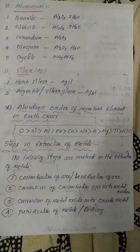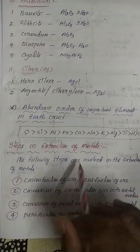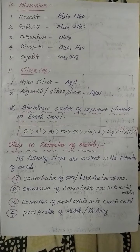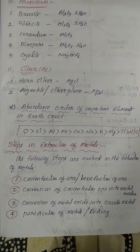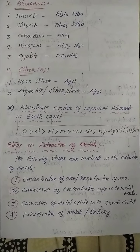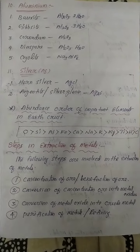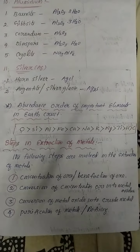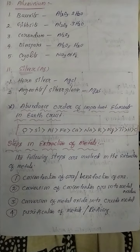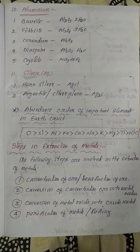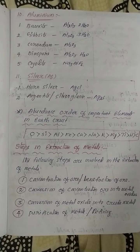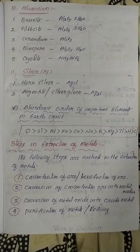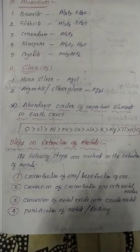In the atmosphere, nitrogen is in first place and oxygen is in second place. But in the earth's crust, oxygen is first, silicon is second, and aluminium is third. These are the important facts about metals and minerals.